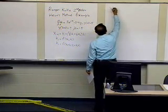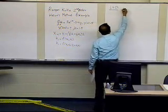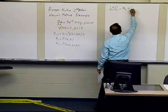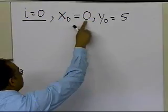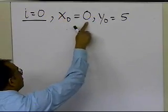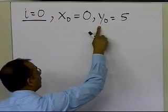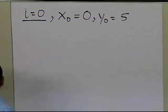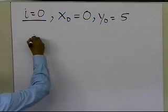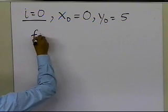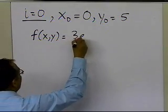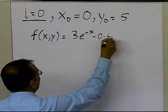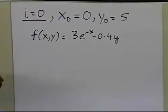Choosing i equal to 0, x-sub-0 is 0 and y-sub-0 is 5, from the initial condition. The function f(x, y) is 3e to the power minus x, minus 0.4y, taken directly from the form of the differential equation given to us.